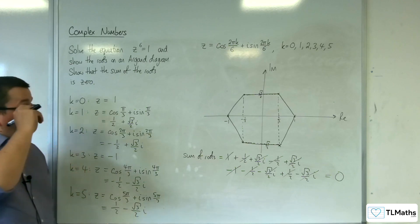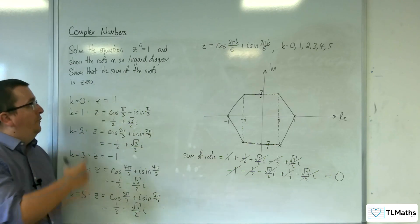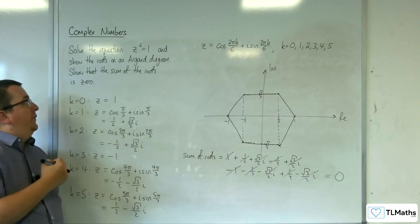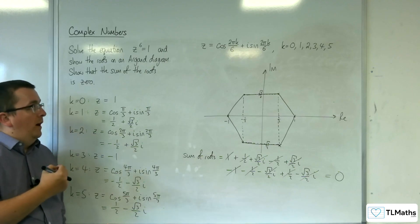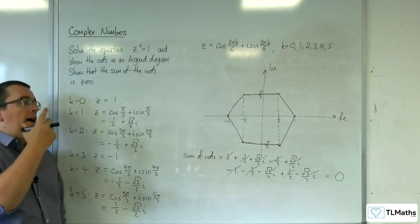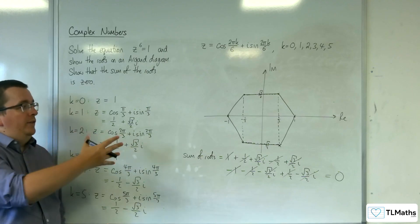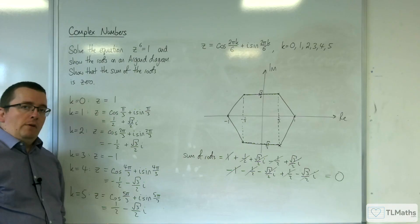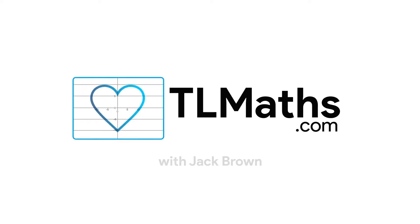And so that's how we can find the roots very easily of z to the 6 equals 1, and then plot them on an Argand diagram. Thank you.